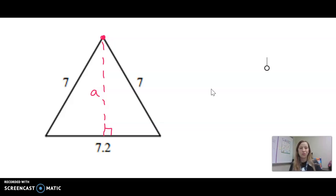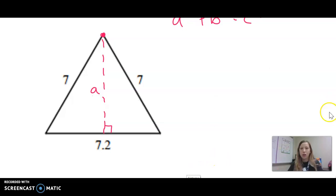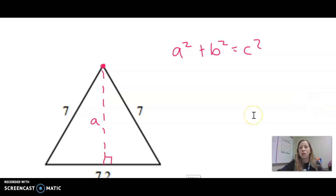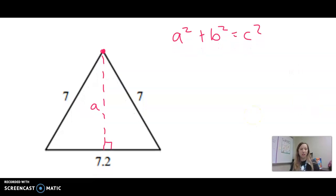Now in order to find the altitude though, we are going to have to use the Pythagorean Theorem. A squared plus B squared equals C squared. So in order to do that, in order to use Pythagorean Theorem, we need to know two of the three sides of a right triangle. So I'm specifically talking about this right triangle right here. Please keep that in mind.